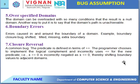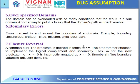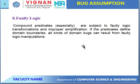For example, using x ≥ 0 is incorrectly negated as x ≤ 0 — these are closure reversal boundary bugs. Next: Faulty Logic — compound predicates are subject to faulty logic transformations and improper specification. If predicates define domain boundaries, all kinds of domain bugs can result from faulty logic manipulations, including improper simplification.